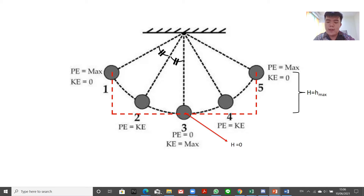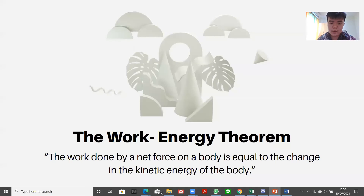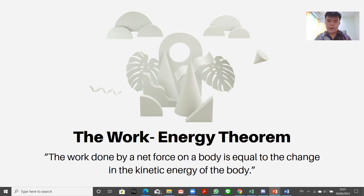This also proves that when the pendulum is at the lowest point, there is no potential energy since there is zero height. Therefore, during the lowest point, the kinetic energy is maximum. The work-energy theorem states that the work done by a net force on a body is equal to the change of kinetic energy in the body.